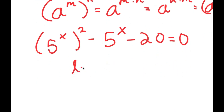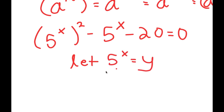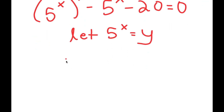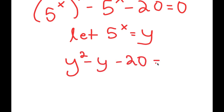Now I'm going to let 5 to the power of x equal y. So I get y squared minus y minus 20 is equal to zero.